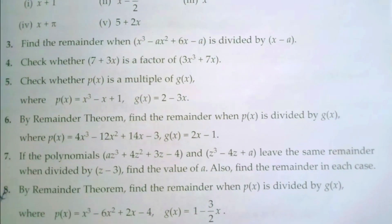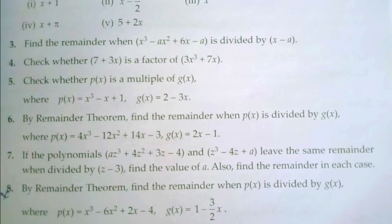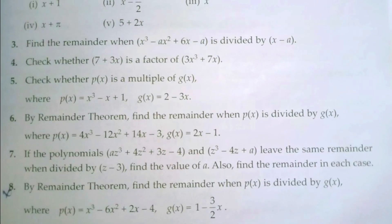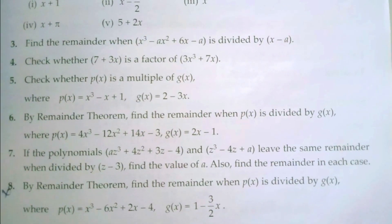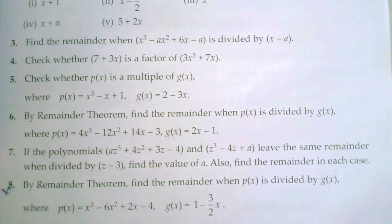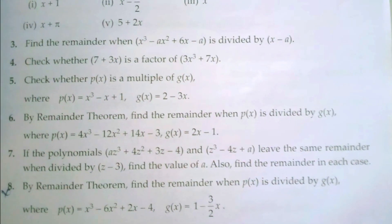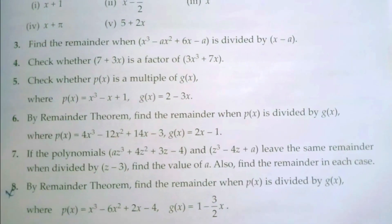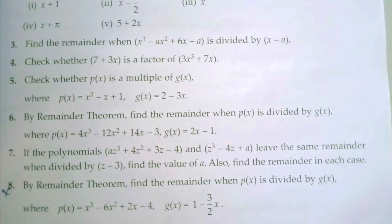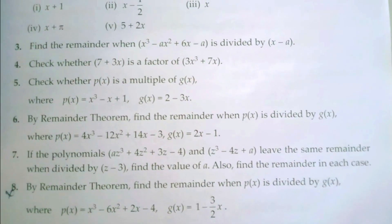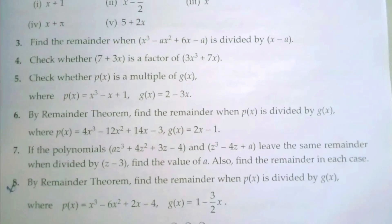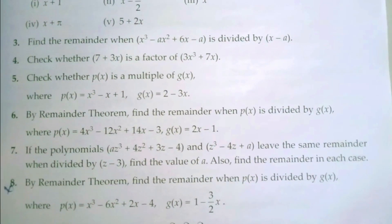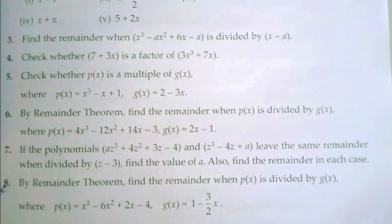P of x is equal to 4x cubed minus 12x squared plus 14x minus 3. G of x is equal to 2x minus 1.